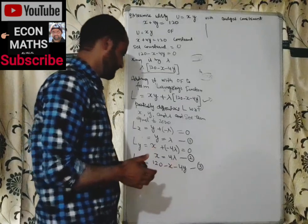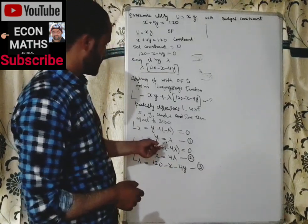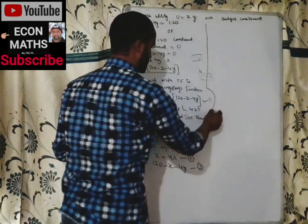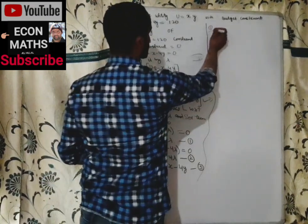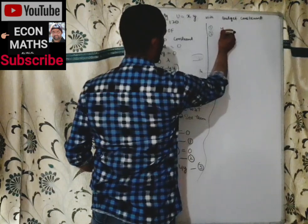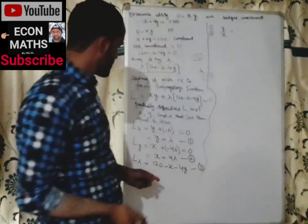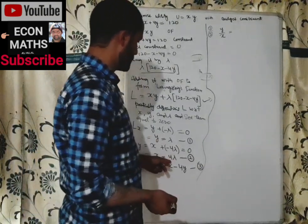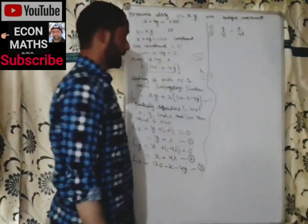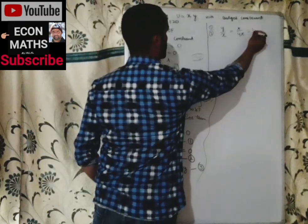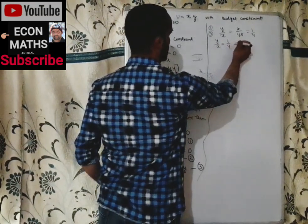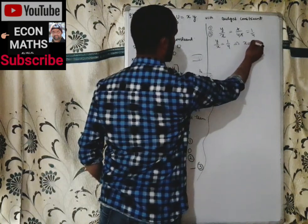To find the relationship between x and y, we divide Equation 1 by Equation 2: y/x = λ/(4λ). The lambdas cancel, giving y/x = 1/4, which implies x = 4y.